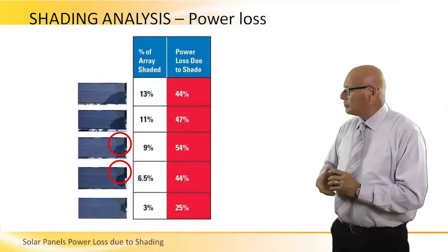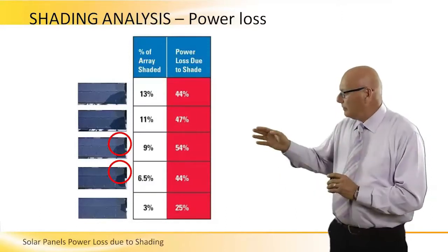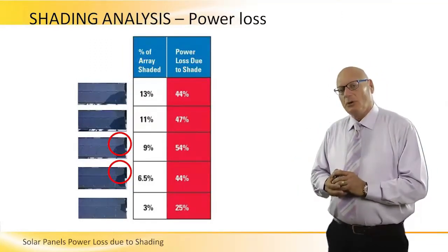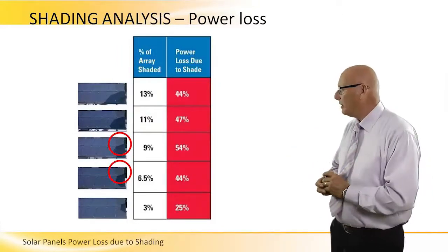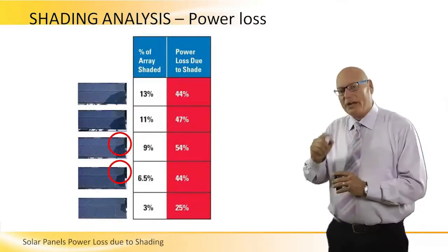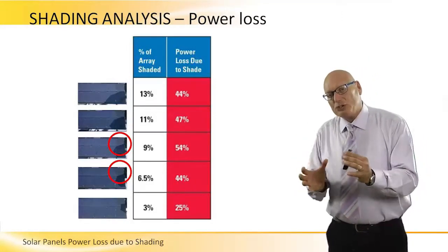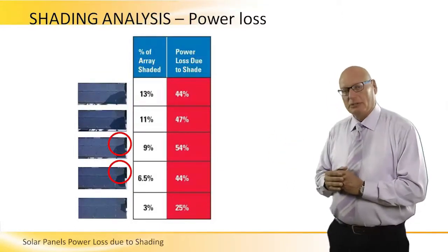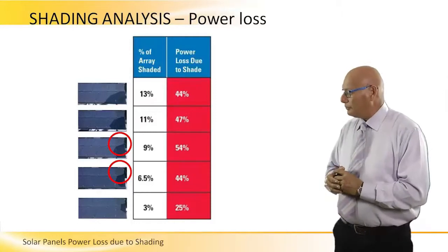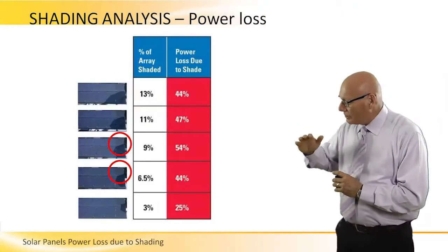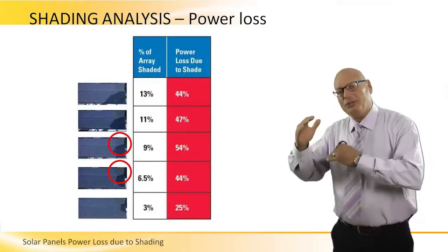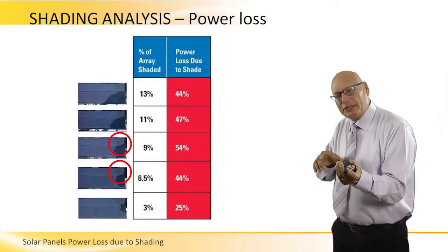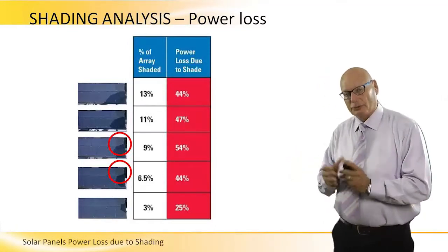Look at the 9% shaded area in the center example. Although there's only 9% shaded area, we lose 54% of the power. The reason we lose so much is because of the arrangement of the shade over the array — it crosses more than 50% of the width of the array. So it kills not only the left set of panels, but also the right set of panels from an output power point of view.